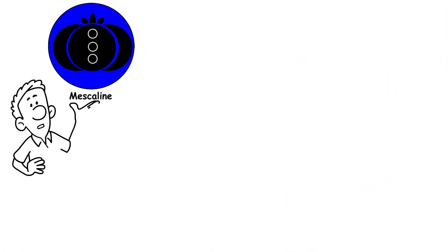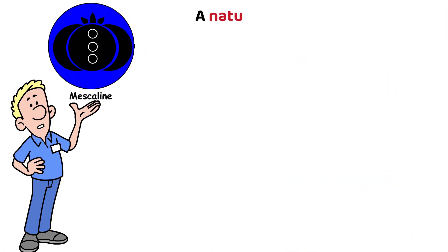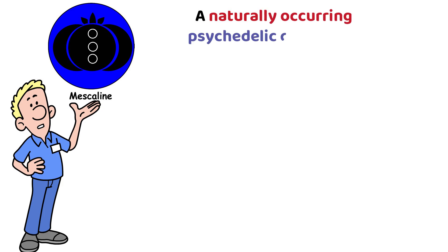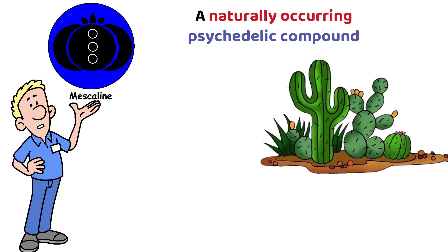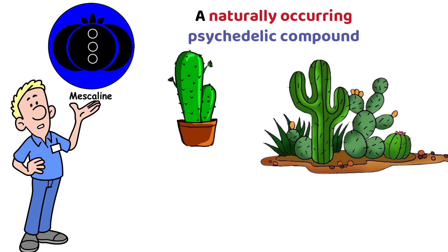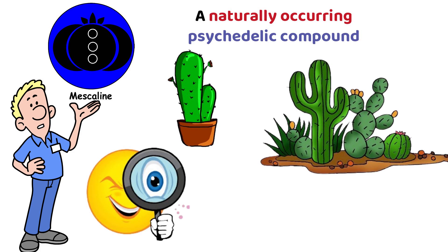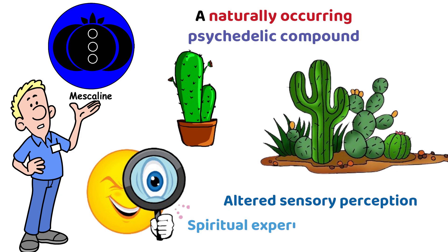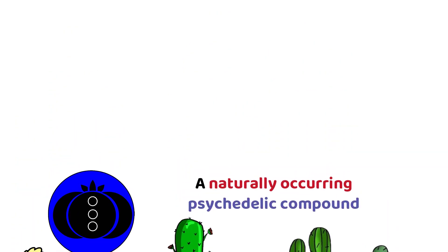Mescaline is a naturally occurring psychedelic compound found in certain cacti, notably peyote. It can produce visual hallucinations, altered sensory perception, and spiritual experiences when ingested.